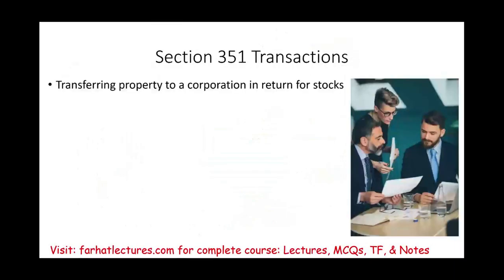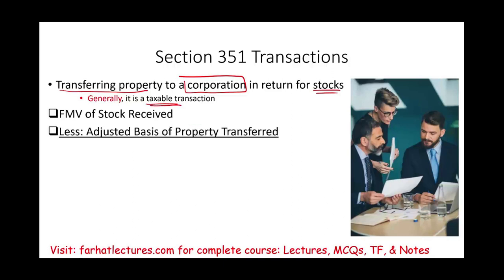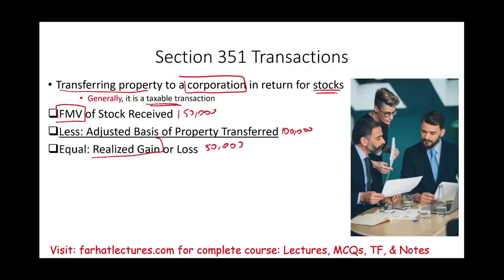Section 351 involves transferring property to a corporation in return for stocks. Generally, when you transfer property to another party and they give you something in return, that is a taxable transaction. We compute the taxable amount as the fair value of the stock received minus the adjusted basis of the property transferred, resulting in a realized gain or loss. For example, if the fair value of the land is $150,000 and the adjusted basis is $100,000, you have a $50,000 realized gain.